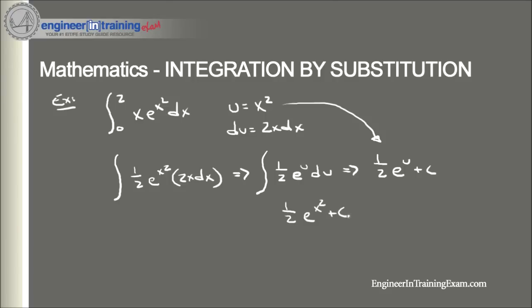Now, all we need to do is evaluate the definite integral from 0 to 2. Plugging in those values, we find that it's (1/2)e^(2²) minus (1/2)e^(0²), which is equal to (1/2)(e⁴ - 1).